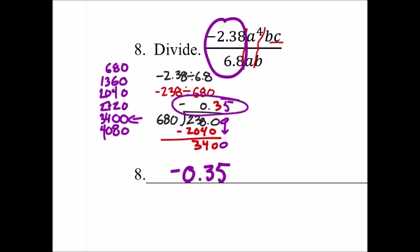So what about the a's? If we look at the a's, we've got a times a times a times a divided by a. And when we cancel these out, we have three more a's. So that would give us a cubed.